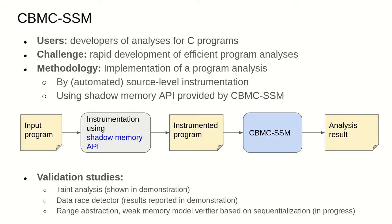CBMC SSM is intended to be used by developers of analysis for C programs. It enables rapid development of efficient program analysis by providing a shadow memory API that separates the specification of a program analysis from the details of a highly efficient verification backend. Users are required to follow the methodology of implementing a program analysis by an automated source level code instrumentation which makes use of the shadow memory API provided by CBMC SSM. A typical flow starts from an input program and automated instrumentation that contains calls to the shadow memory API is applied to that input program.